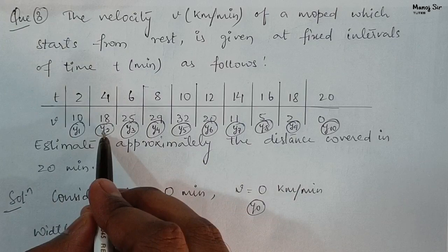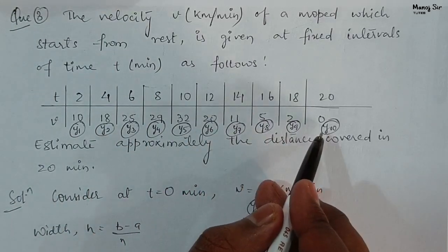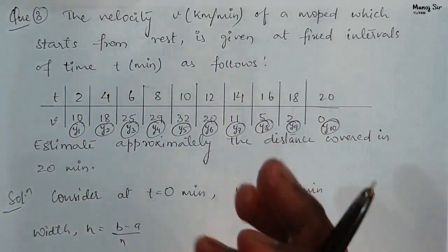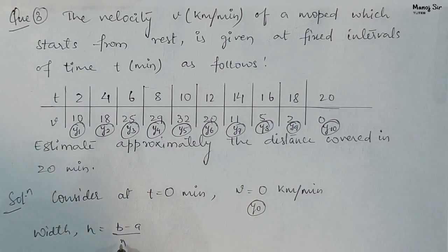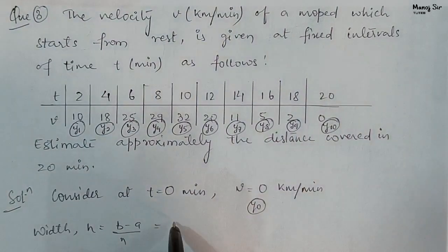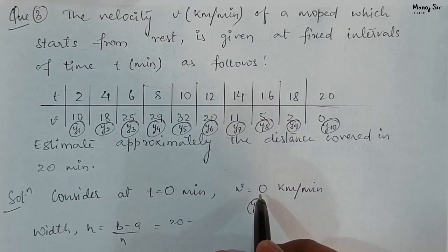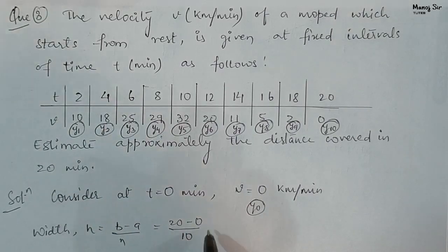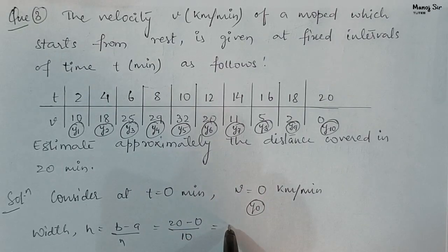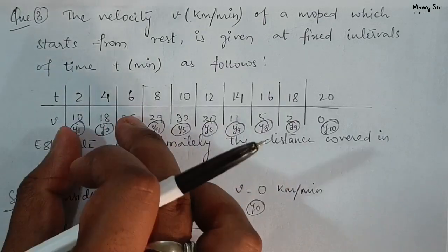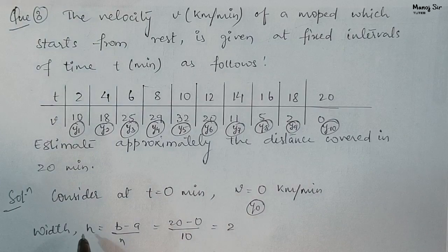Counting again: there are 11 elements, so n equals 11 minus 1 equals 10. Here b is the extreme value, that is 20, and a is the initial value, that is 0, since the limit is from 0 to 20. So h equals 20 minus 0 upon 10, giving h equals 2. The interval size is 2, which we can verify from the table: 0, 2, 4, 6, 8 — the difference is always 2.